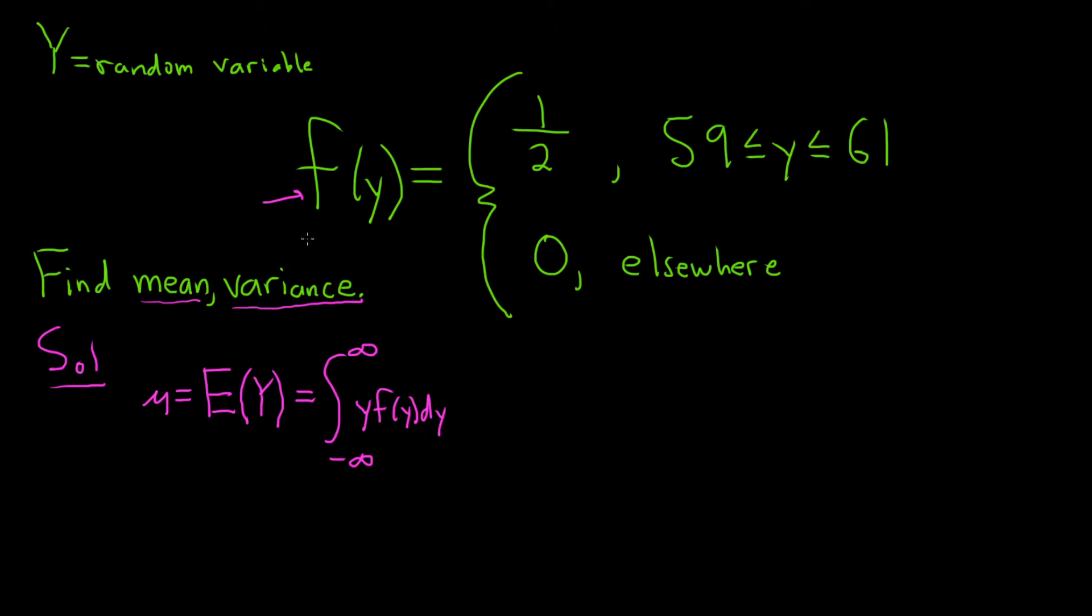Now we have to look at our density function and figure out how to break up this integral. We're integrating from negative infinity to infinity. So from negative infinity to 59, it's going to be 0, because the only time it's not 0 is when y is here. I'm going to show that step just to show a little bit of extra work. This is a step that people usually skip.